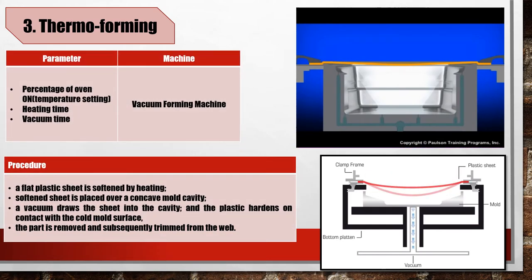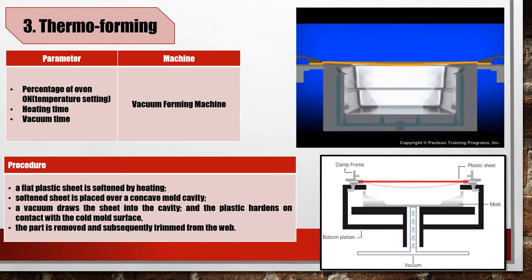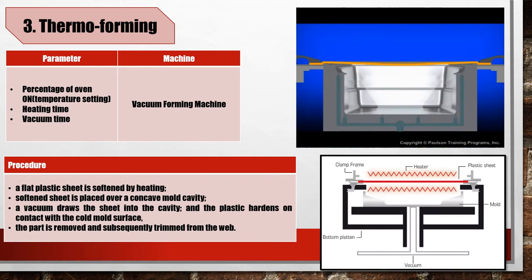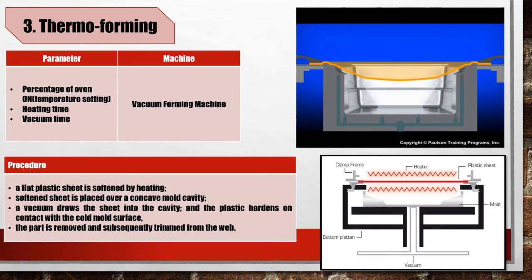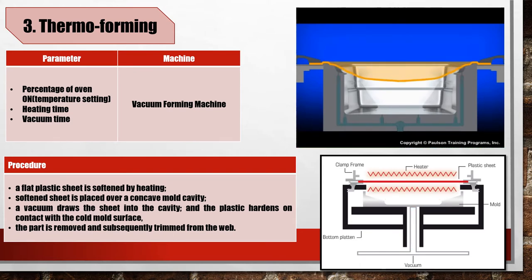Third, thermoforming. In thermoforming, a sheet of thermoplastic is heated and deformed into a female die by vacuum or gas pressure. Thermoforming is a secondary shaping process, the primary process being that which produces the sheet or film. Thermoforming consists of two main steps: heating and forming. Heating is usually accomplished by radiant electric heaters located on one or both sides of the starting plastic sheet at a distance of roughly 125 mm. The duration of the heating cycle needed to sufficiently soften the sheet depends on the polymer, its thickness, and color. The method of producing a PVC packaging product is the vacuum thermoforming method. A flat plastic sheet is softened by heating, then placed over a concave mold cavity. A vacuum draws the sheet into the cavity and the plastic hardens on contact with the cold mold surface. Finally, the part is removed and trimmed from the web.